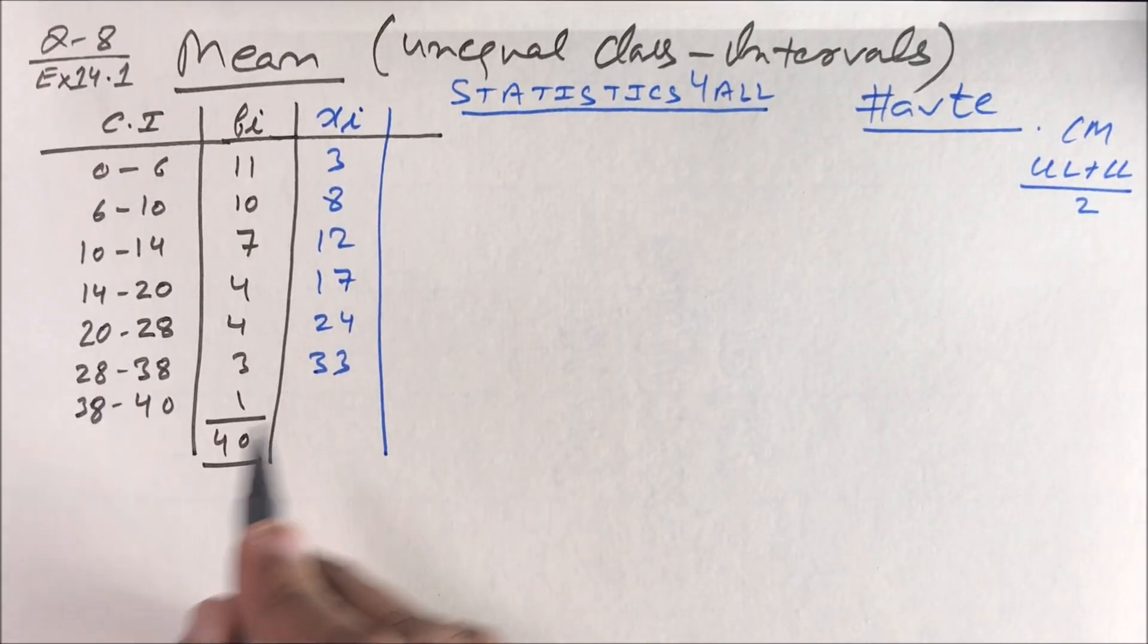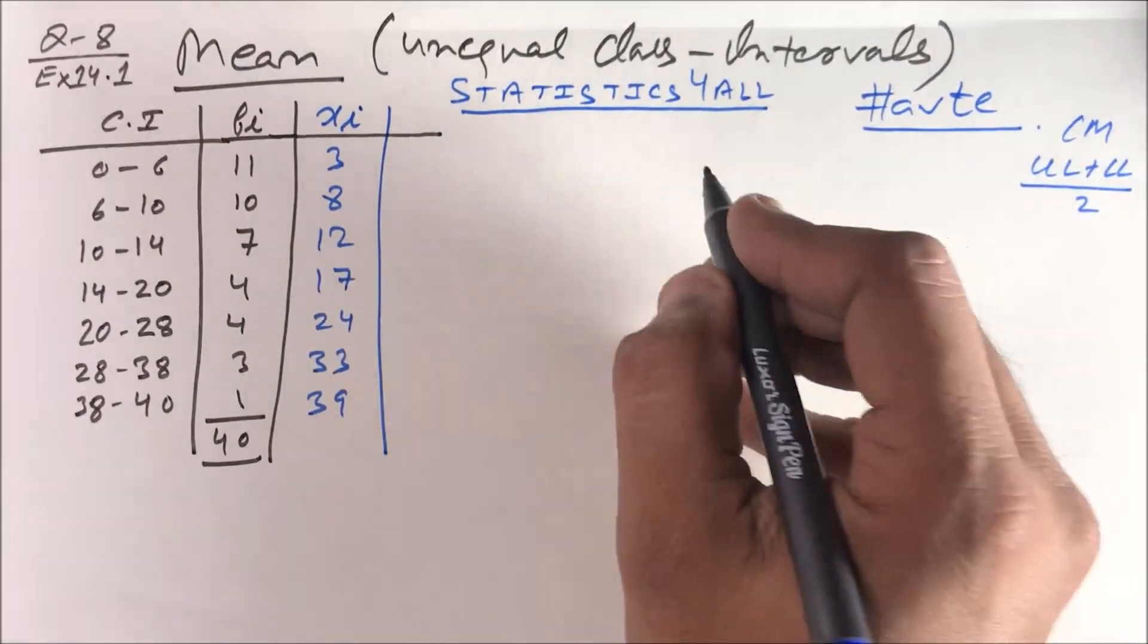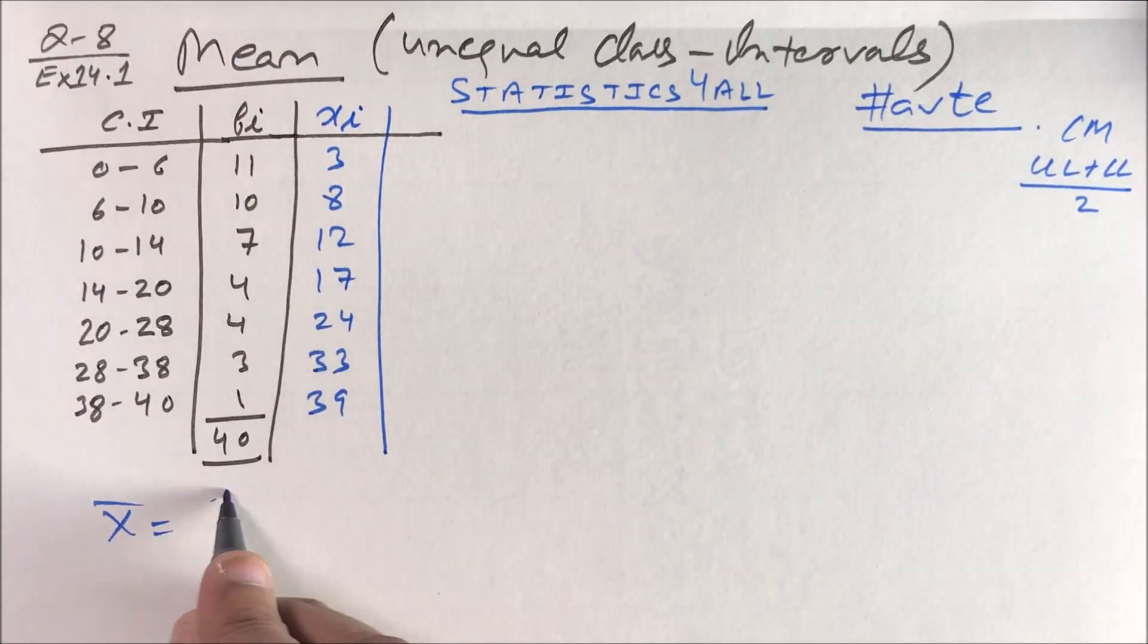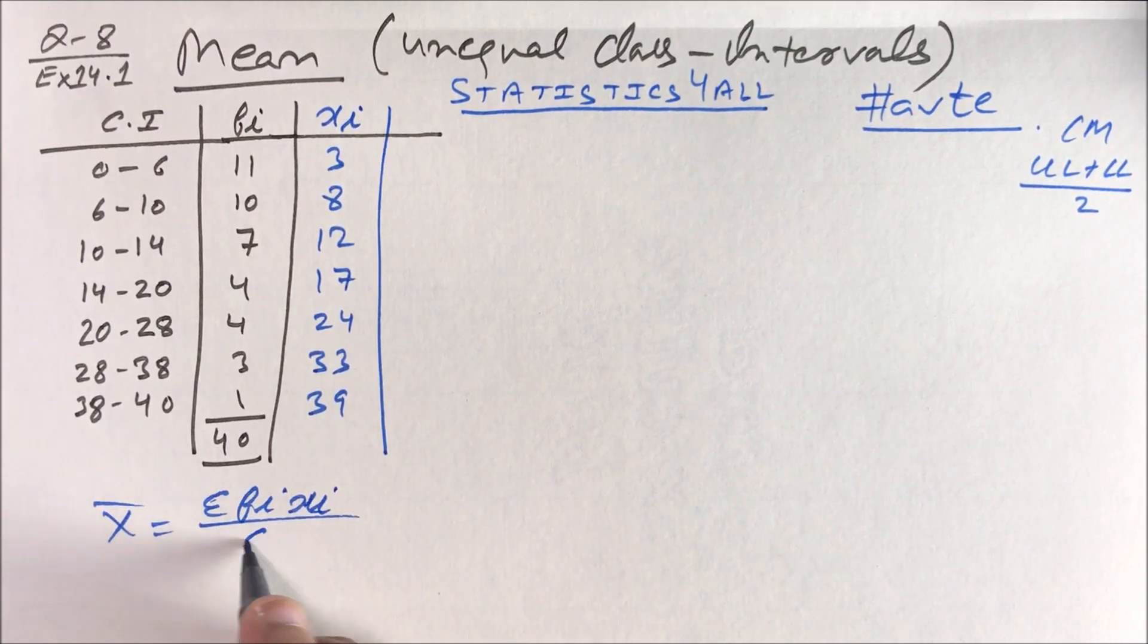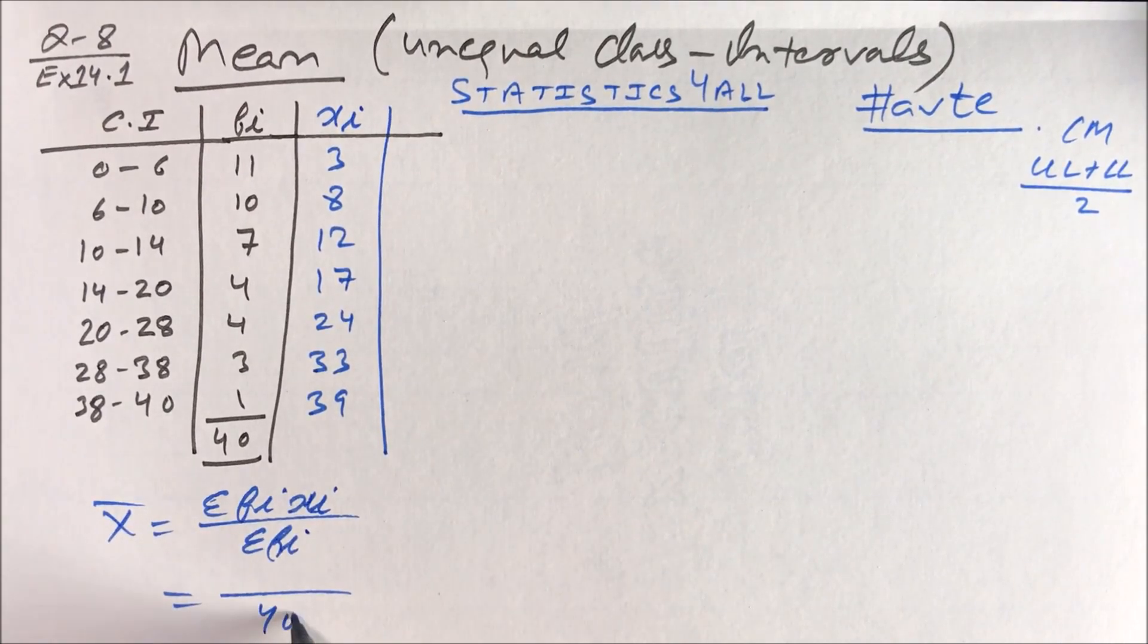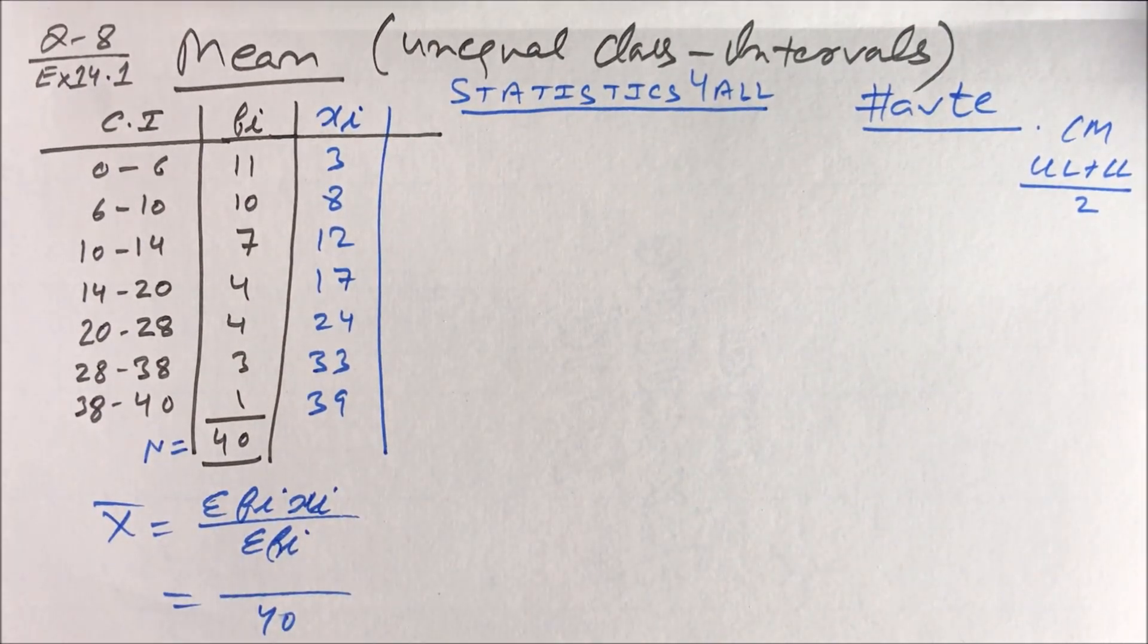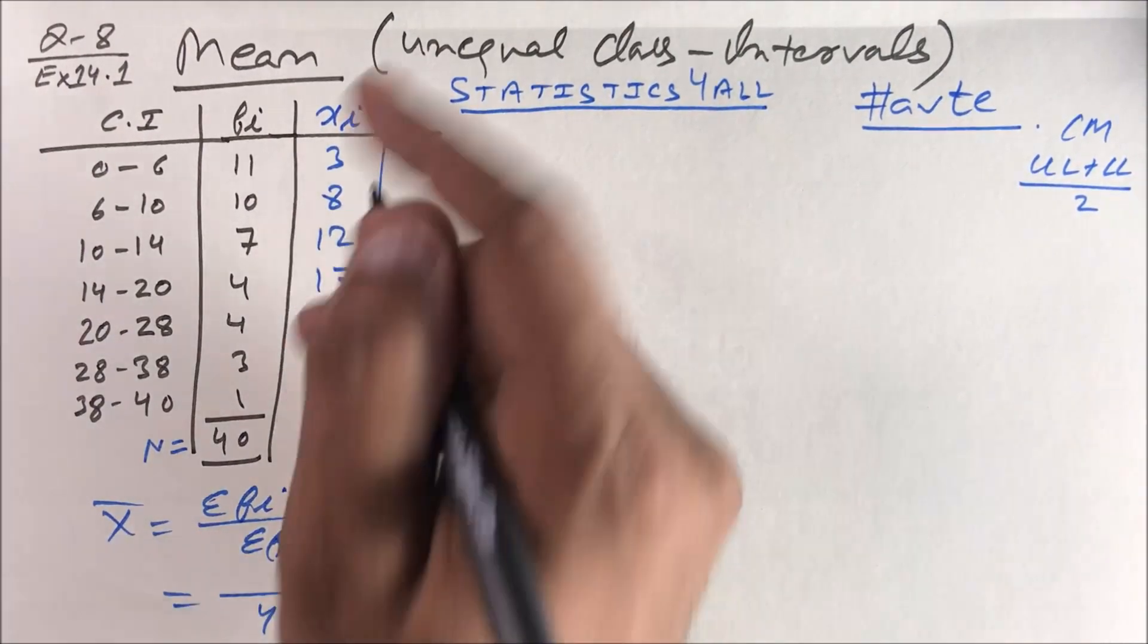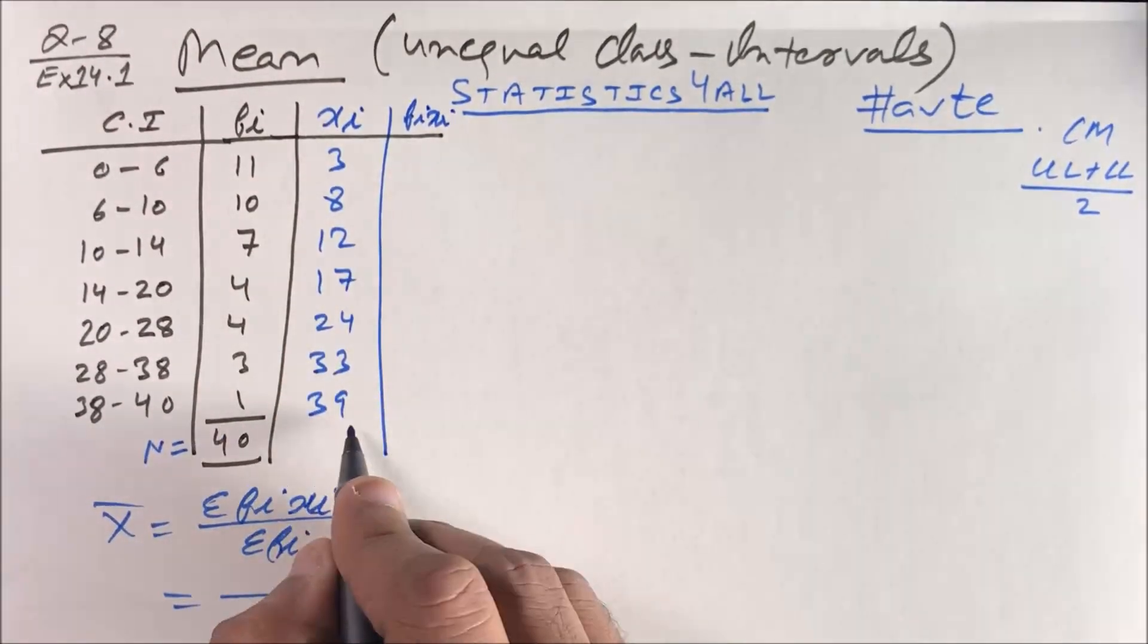Now the formula of mean is Σf_i·x_i by capital N, or Σf_i. Your Σf_i is 40 - you can call this capital N also. Now you have to find Σf_i·x_i. The column is f_i·x_i.